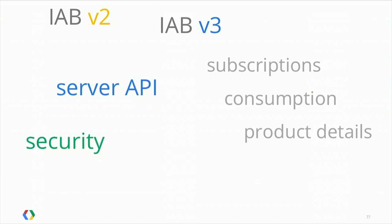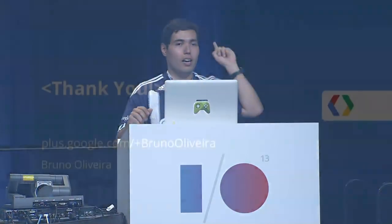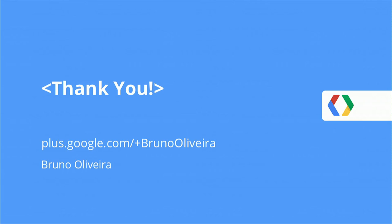In summary: we talked about the most challenging points of in-app billing v2 and how v3 was designed to address those. We covered subscriptions, new API features like consumption and the product details API, the server API, security best practices, and the IAB sandbox which makes it much easier to test in a real environment. We are constantly improving the API because we want to improve the developer experience — if we give you a good experience as a developer, you can focus on what makes your apps great, which benefits your users. Thank you very much for attending this session.